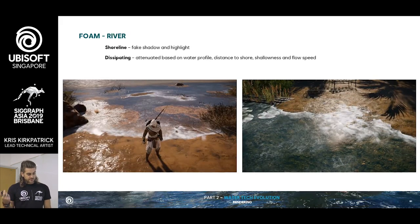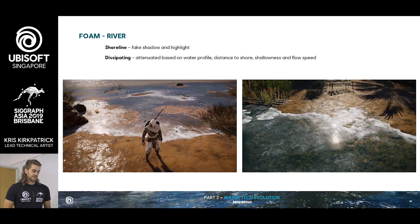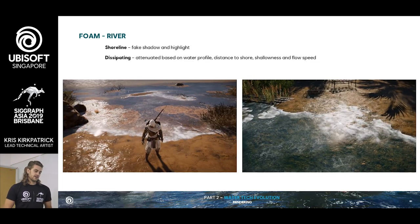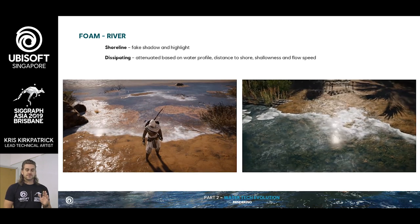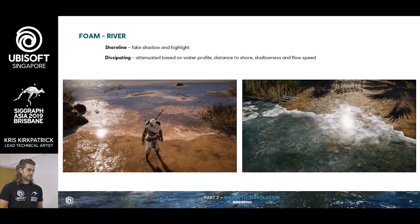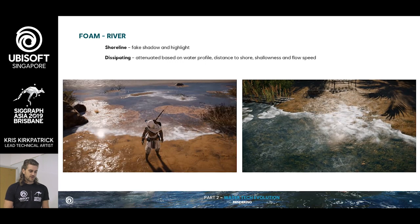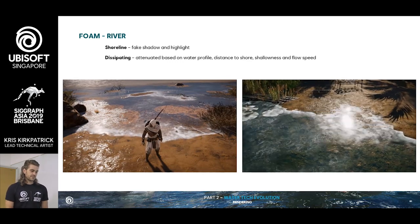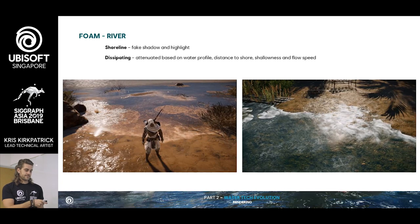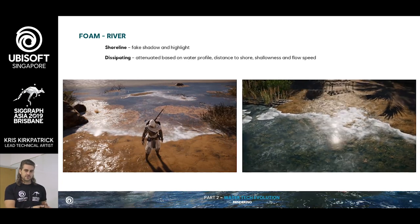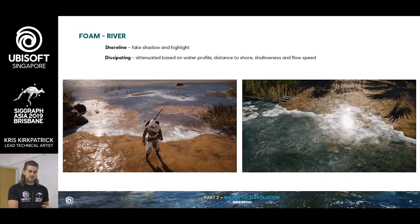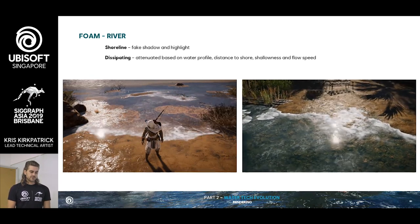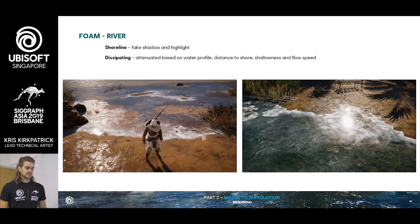For foam on the river, we have a slightly different system. Two kinds of river foam: we have the shoreline foam, to which we've added a fake shadow and highlight to help it pop around the edges, and then the dissipating foam. We can also attenuate based on the water type — so if it's a muddy river, we can tint it a little bit brown so it feels more integrated into the type of water.